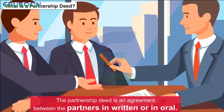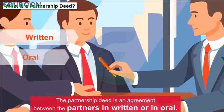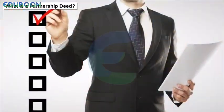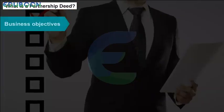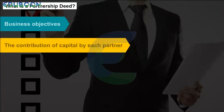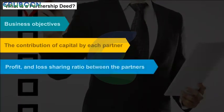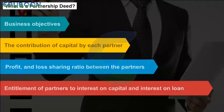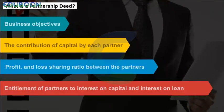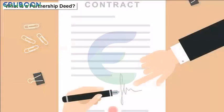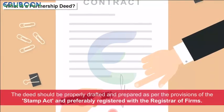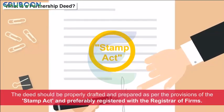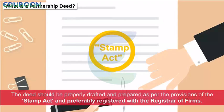What is a Partnership Deed? The partnership deed is an agreement between the partners in written or oral form. It contains the terms of the agreement, all details about the business objectives, the contribution of capital by each partner, profit and loss sharing ratio between the partners, and entitlement of partners to interest on capital and interest on loan. The deed should be properly drafted and prepared as per the provisions of the Stamp Act, and preferably registered with the registrar of firms.